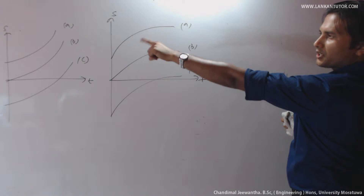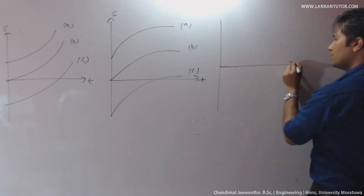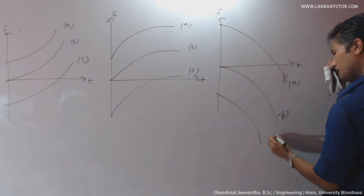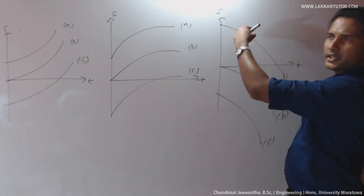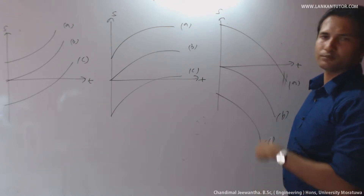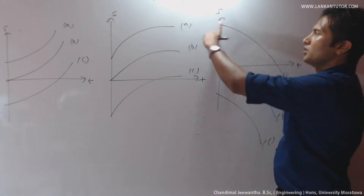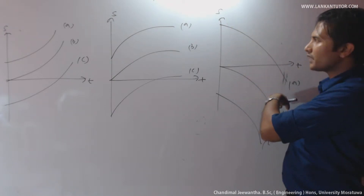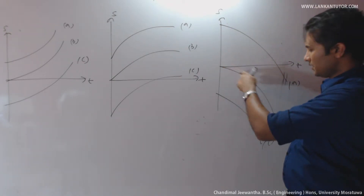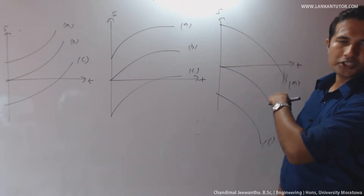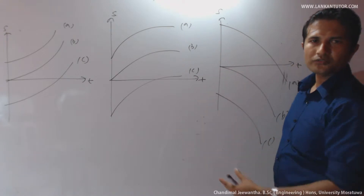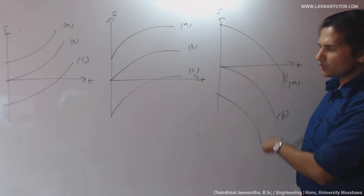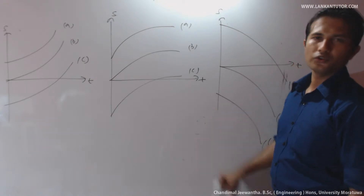Now we have to consider the opposite — uniform acceleration towards the negative direction. Simple A: starts from positive displacement, moves towards the negative direction with uniform acceleration. Simple B: object goes through the origin towards the negative direction with uniform acceleration. Simple C: object starts from negative displacement and goes towards the negative direction with uniform acceleration.